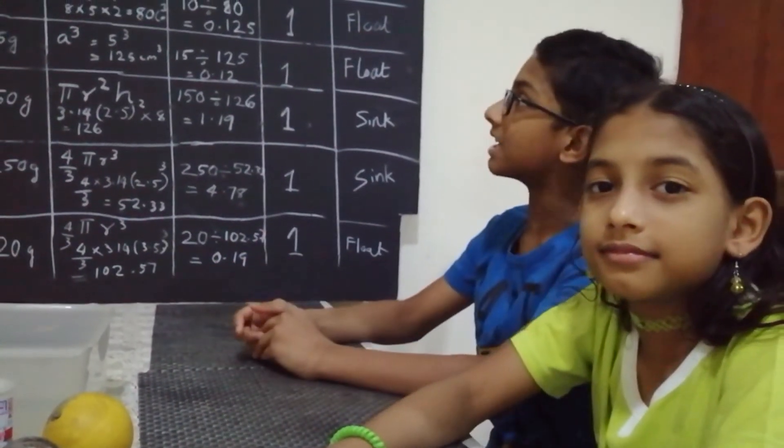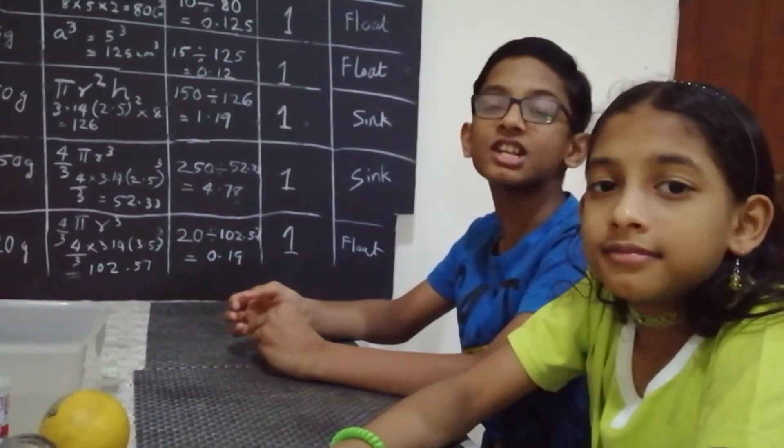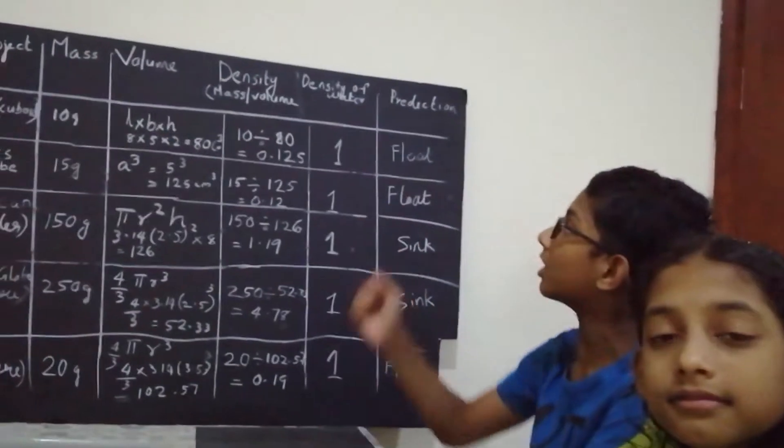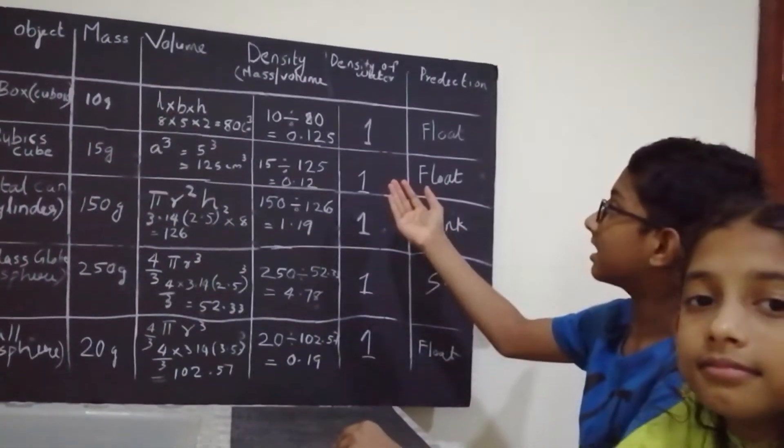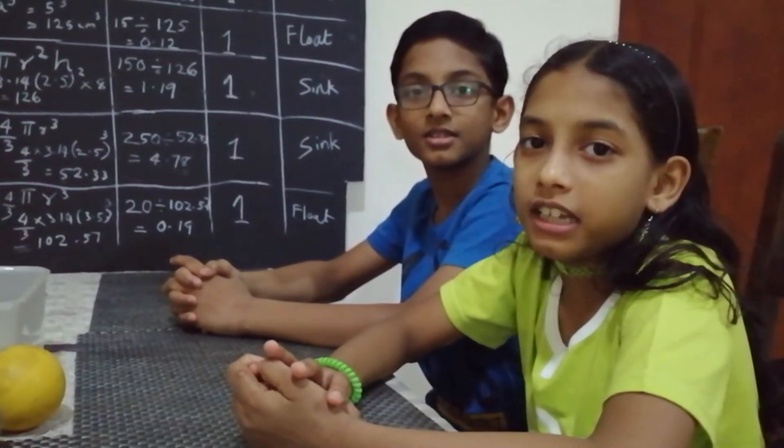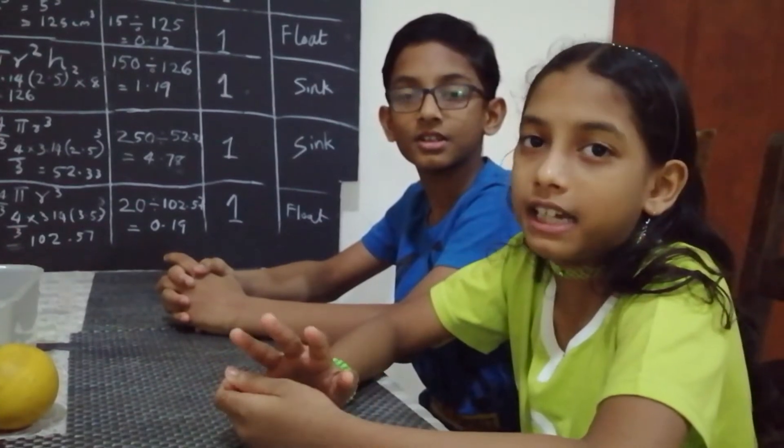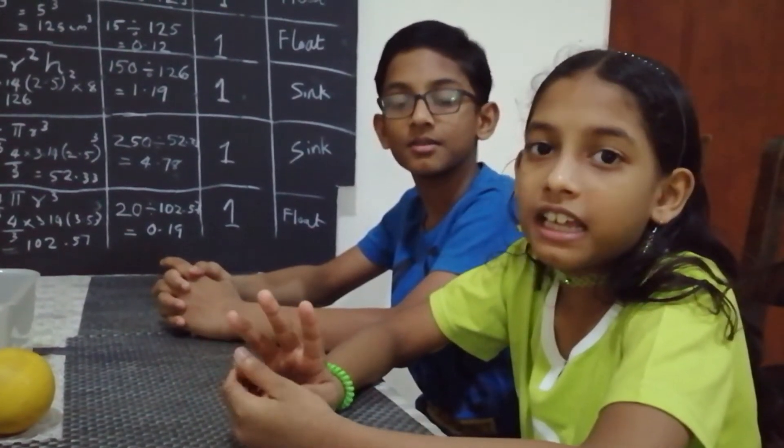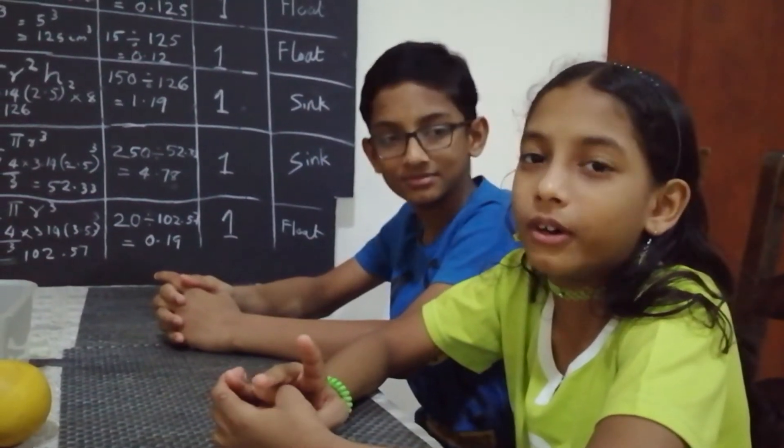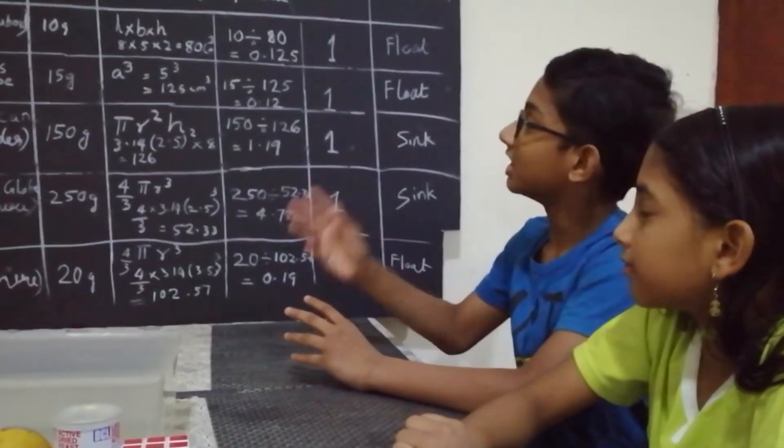Now, let us predict the buoyancy by calculating density. Density means mass divided by volume. Density of water is always 1 gram per centimeter cube. If an object is more dense than the water, it will sink. If an object is less dense than the water, it will float. Now, let us calculate the density.